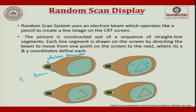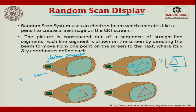Each line segment is drawn on the screen by directing the beam, which moves from one point of the screen to the next, where x and y coordinates define each other. Since it is a plane, you have only x and y. These are the x and y coordinates which are displayed such that you can produce the image you want. This is how your random scan display works.